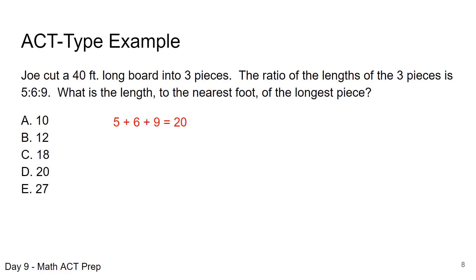The way we first worked this problem, we took the ratio that we were given, the 5 to 6 to 9, and added those up. Remember we talked about we could add up the part-to-part components and we get 20. Now we know that the board is 40 feet long, so we can take the 40 feet, divide it by 20, and we get 2. So that's our multiple.